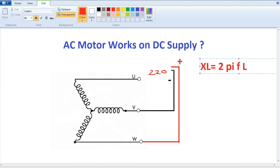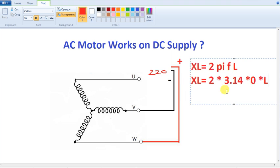Now, DC source apply. XL = 2π (that is 3.14) times f times L. What is the frequency? The frequency is 0. So if we calculate XL, it is 0. XL = 0.